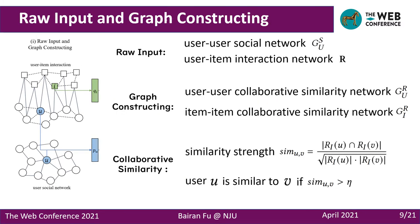The first is the graph construction module. We define collaborative similar users as users who have similar consumption habits, and collaborative similar items as items with similar clicks or rated history. One way to calculate the collaborative similarity is by the common interaction history of users. User U is collaborative similar to user V if and only if their collaborative similarity is greater than a certain threshold, and the item's collaborative similarity relation is defined the same way.